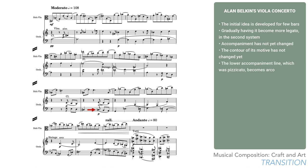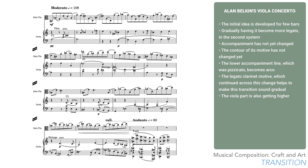Then the lower accompaniment line, which was pizzicato, becomes arco. The legato clarinet motive, which continued across this change, helps to make this transition more gradual. Note that the viola part is also getting higher, preparing for the fuller register of the tutti passage. The strings are also starting to fill out, with viola and cello both playing arco now, and the contour of the viola line is starting to anticipate what's coming.